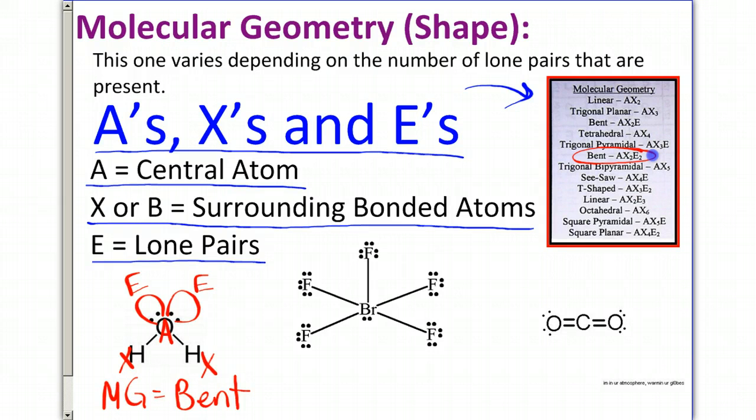BrF5 is going to have A for the center, X, X, X, X, and X for all the fluorines. And we have one lone pair, so that will be given an E. So this has A, X5, E. I'm going to look on my chart and find A, X5, E. And there it is, square pyramidal is going to be the name of this shape. So this one has a molecular geometry of square pyramidal.